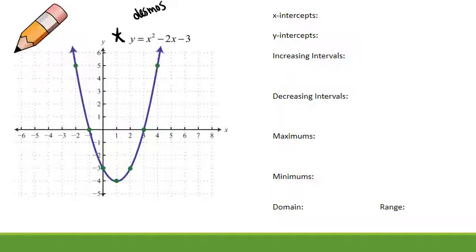Alright, let's start with x-intercepts where we cross the x-axis. Those are points. We cross the x-axis at negative 1 comma 0 and 3 comma 0. Y-intercepts where we cross the y-axis. Looks like we cross there at 0 comma negative 3.